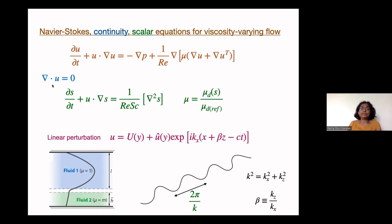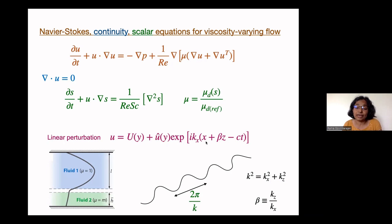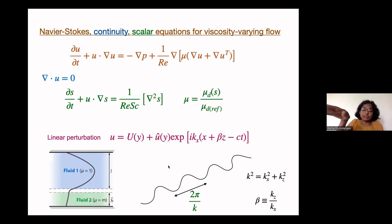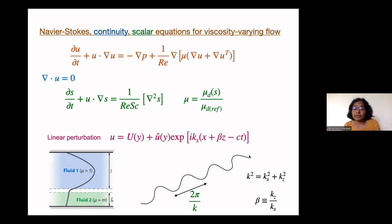As is usual in stability problems, we split the flow into the base flow and a perturbation which has dependence on x, y, z and time. Here kx is the streamwise wave number and beta times kx is the spanwise wave number. So basically we have an oblique wave — you can imagine it in an oblique direction in a plane parallel to the wall — and we ask whether it is stable or unstable.